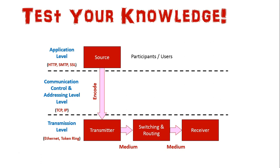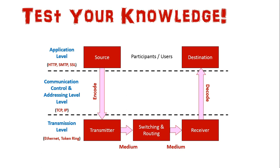The data is then received by the receiver at the destination, which decodes it at the communication control and addressing level. The destination is then able to view and read the message — the participant and user can access the data. This illustrates how a message is created at a source and travels to its intended destination. Hopefully these five questions have helped you better understand the communication systems framework and what's happening at each stage.